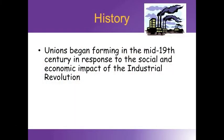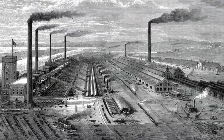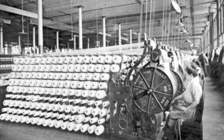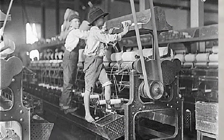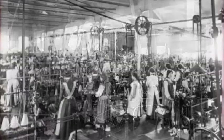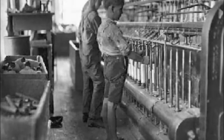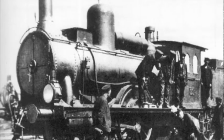Unions began forming in the mid-19th century in response to the social and economic impact of the Industrial Revolution. The Industrial Revolution produced a rapid expansion in factories and manufacturing capabilities, but as workers moved away from farm work to factories, mines, and other hard labor, they faced harsh working conditions — long hours, low pay, and health risks. The government did little to regulate these conditions, so workers took matters into their own hands and formed labor movements to lobby for better rights and safer conditions.